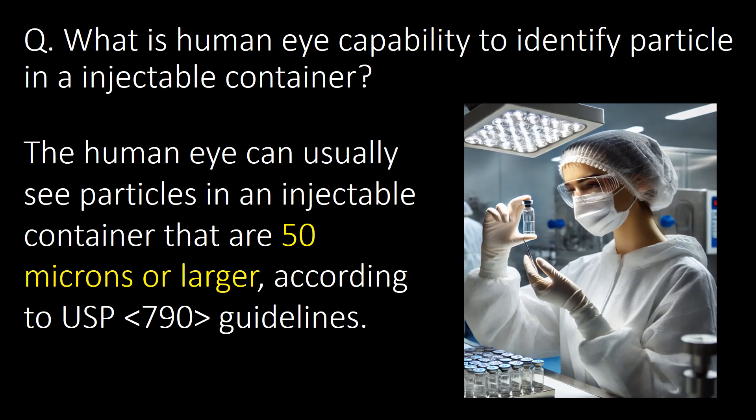What is the human eye's capability to identify particles in an injectable container? As per USP chapter number 790, the human eye can usually see particles in an injectable container that are 50 microns or larger.